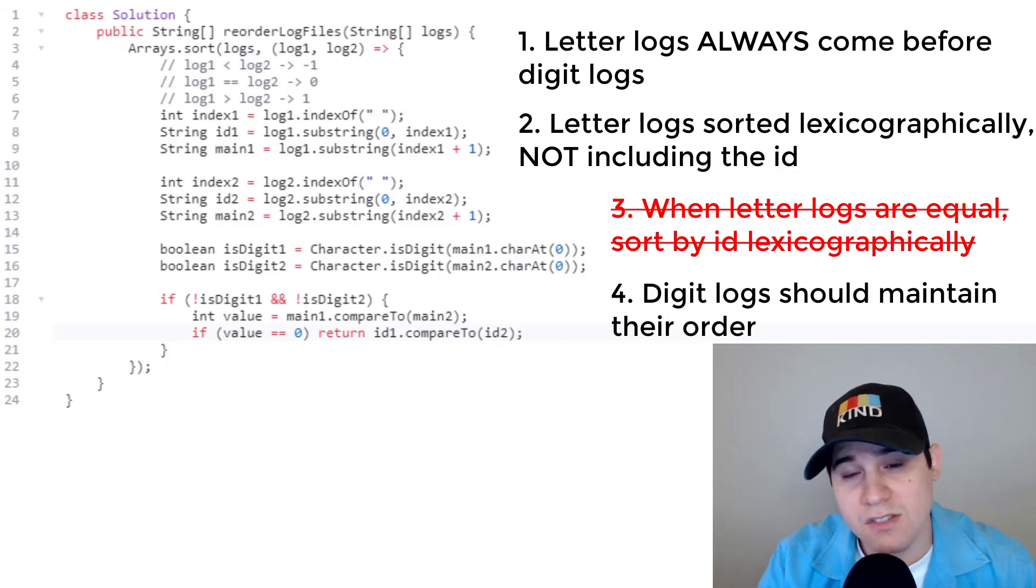So we can x that out. If this is not true, then that means main one and main two, we're not the same. And all we need to do is return the value and that handles that rule.